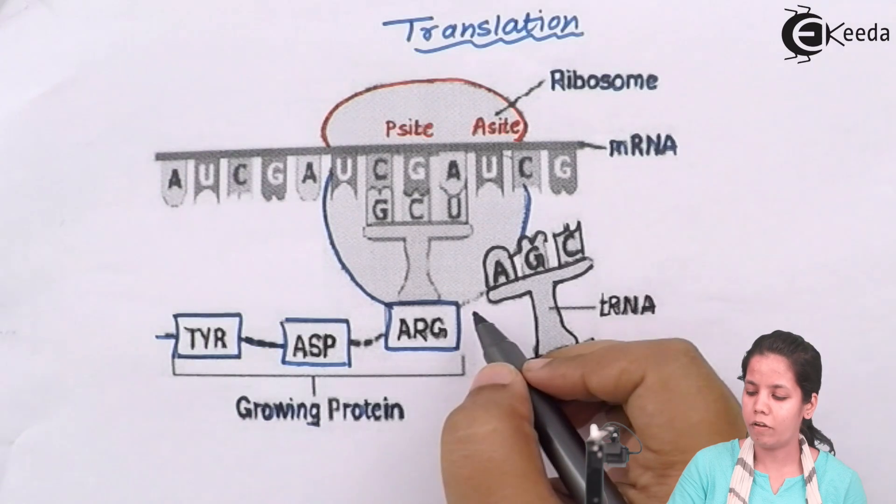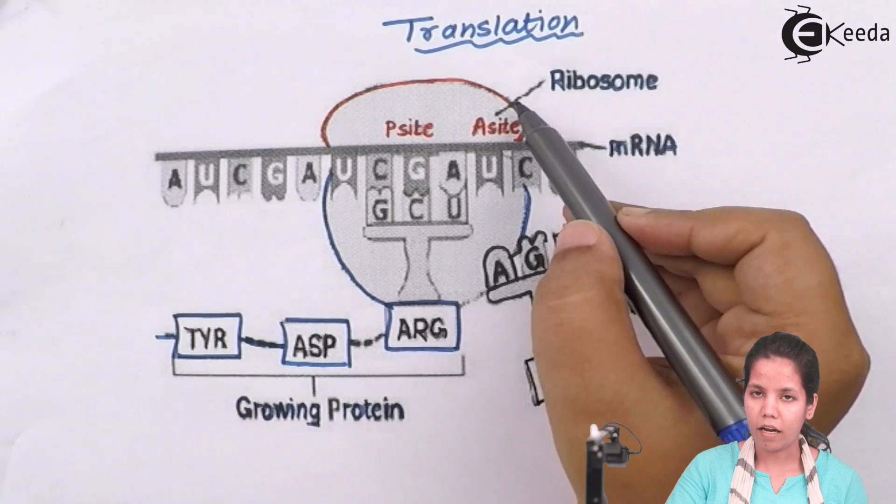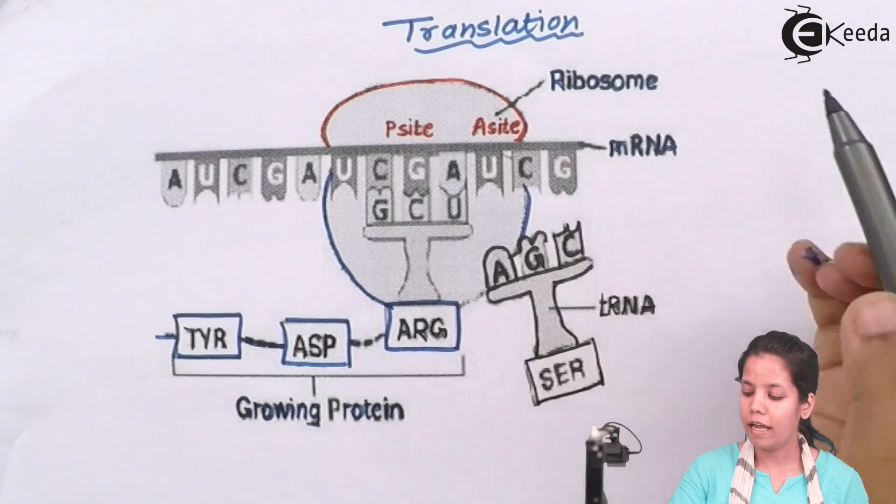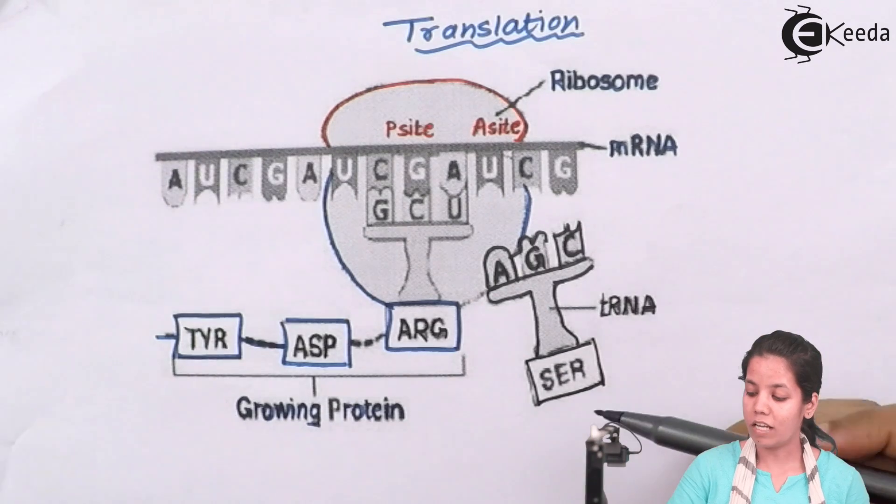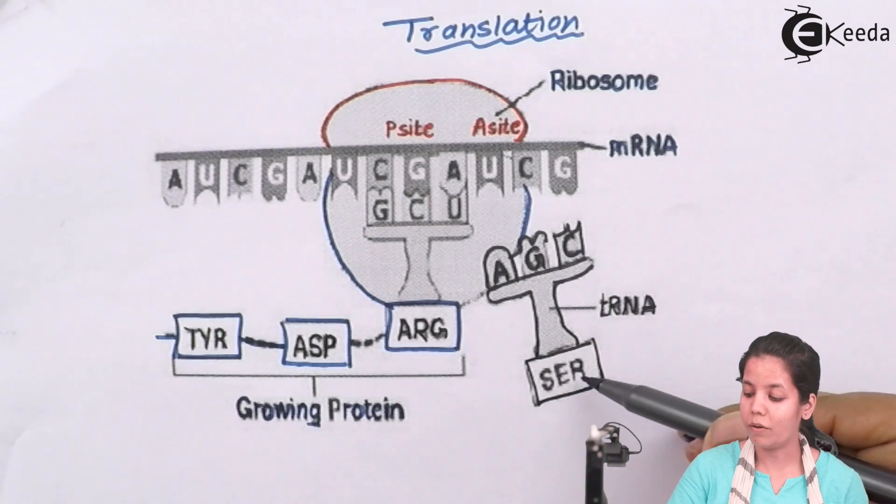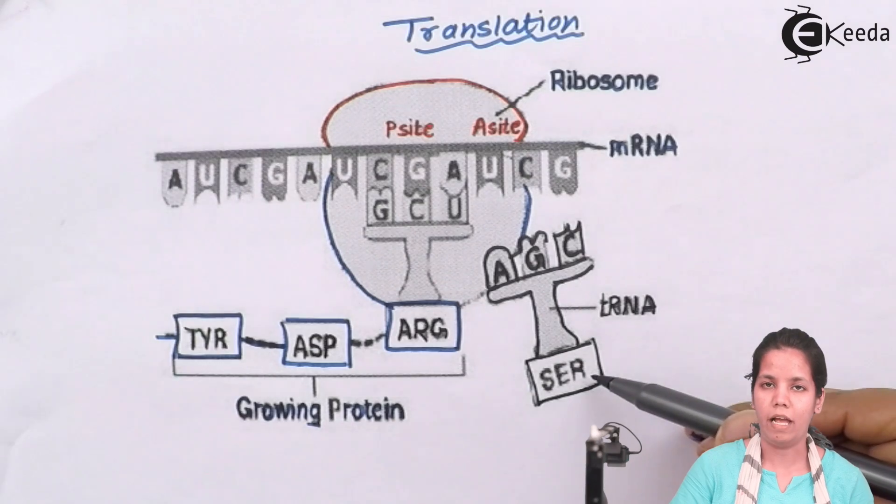So, the three different types of RNA that takes place is mRNA that's messenger RNA, rRNA which is ribosomal RNA and tRNA which is transfer RNA. And this transfer RNA actually carries your activated amino acid. As you can see, it has carried serine which is a type of amino acid. All the 20 amino acids.